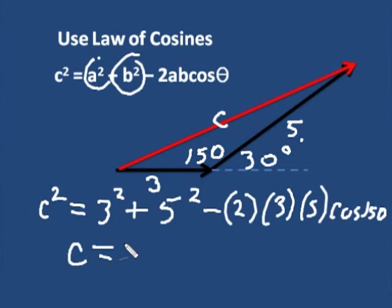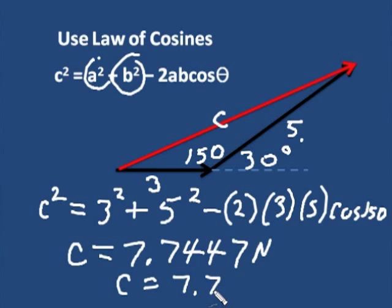And here it is: 7.7447, and that would be newtons. Now you'll need the complete number; we'll use it later. But if someone said what's side c, you'd say 7.7 newtons. Everything would be two significant figures in this.